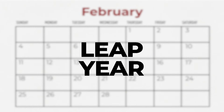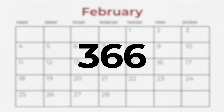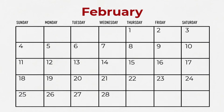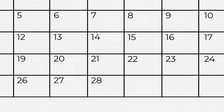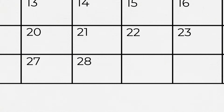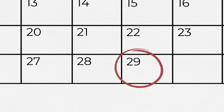A leap year is a year with 366 days instead of the usual 365. An extra day is added at the end of February, which is usually only 28 days long. February 29th is the leap day.